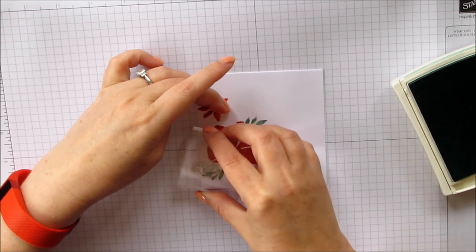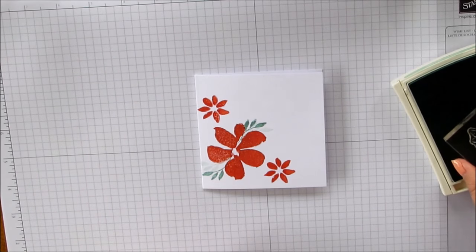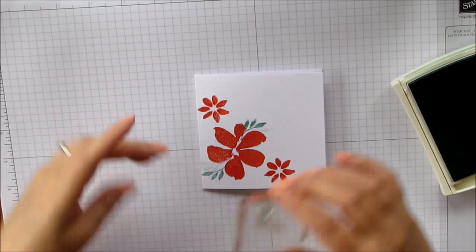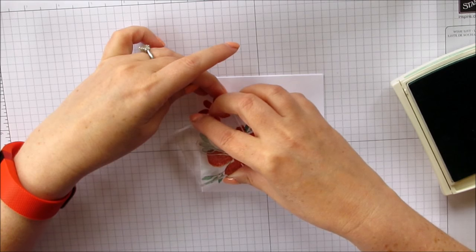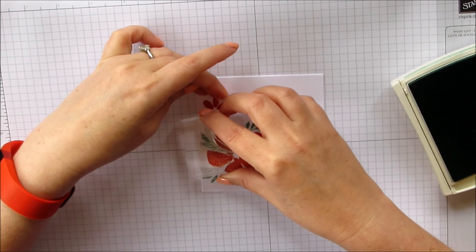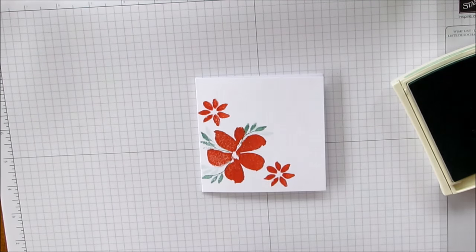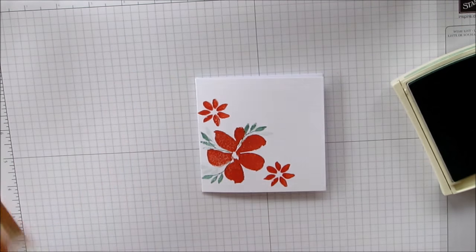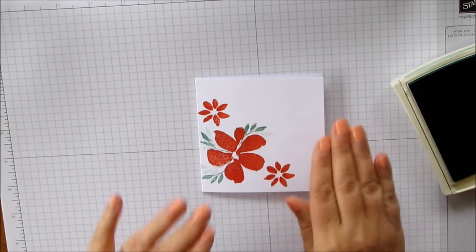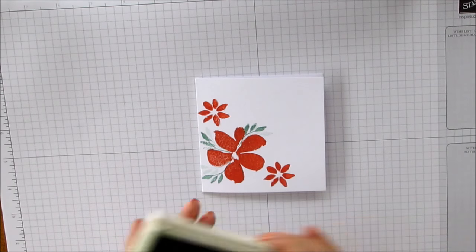And again, stamping once and stamping off. Okay. So you've got three leaves there where you've stamped once, moved it slightly without re-inking and stamped again. Okay.